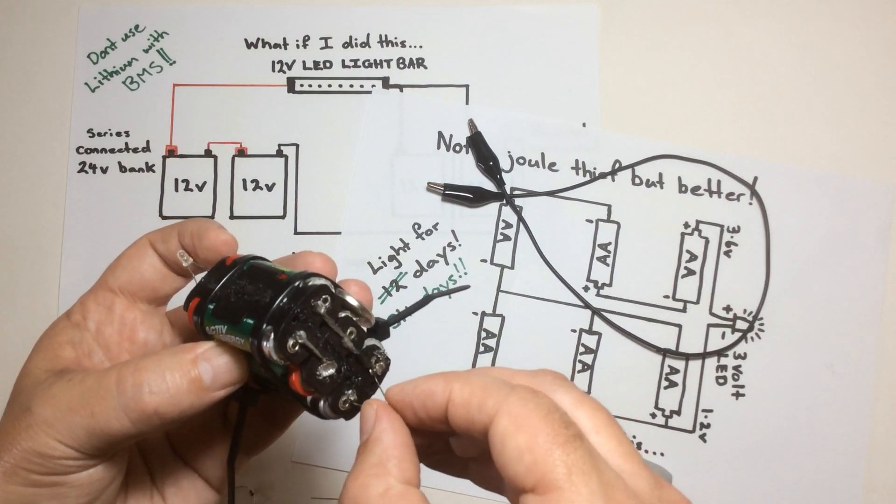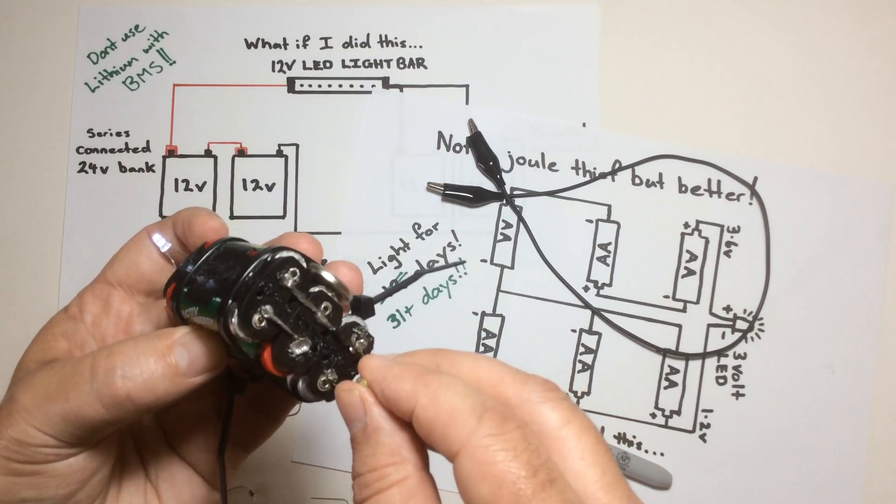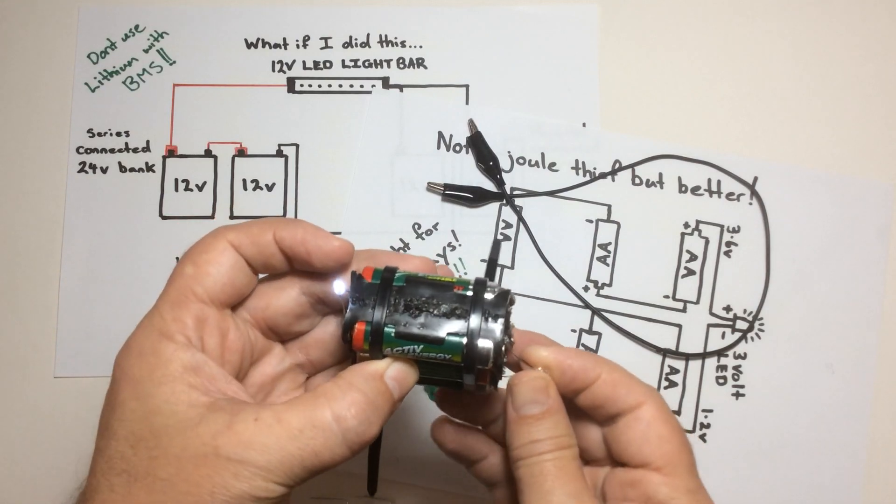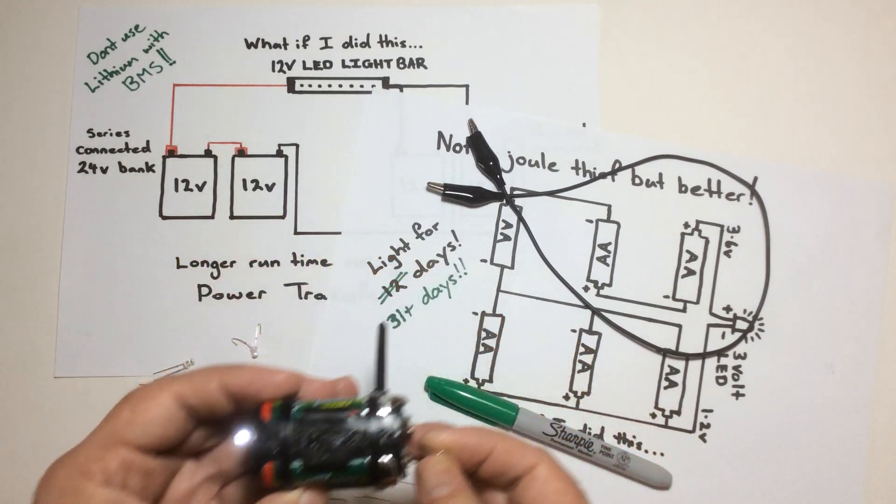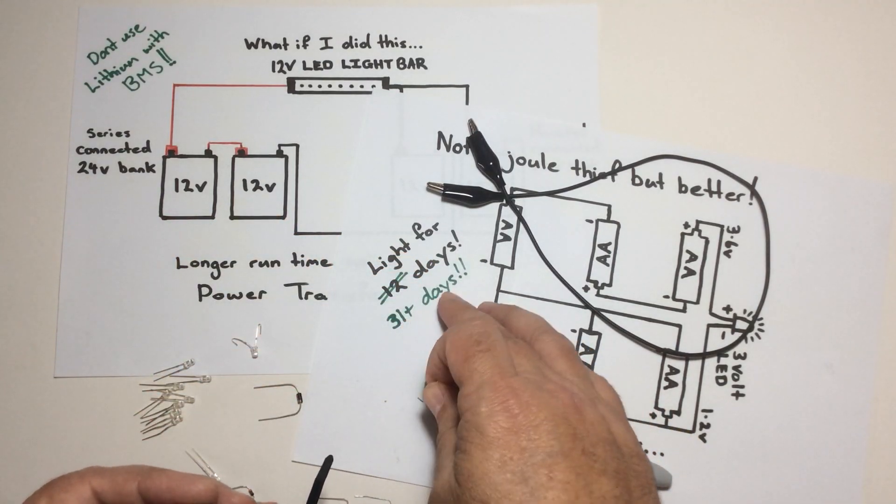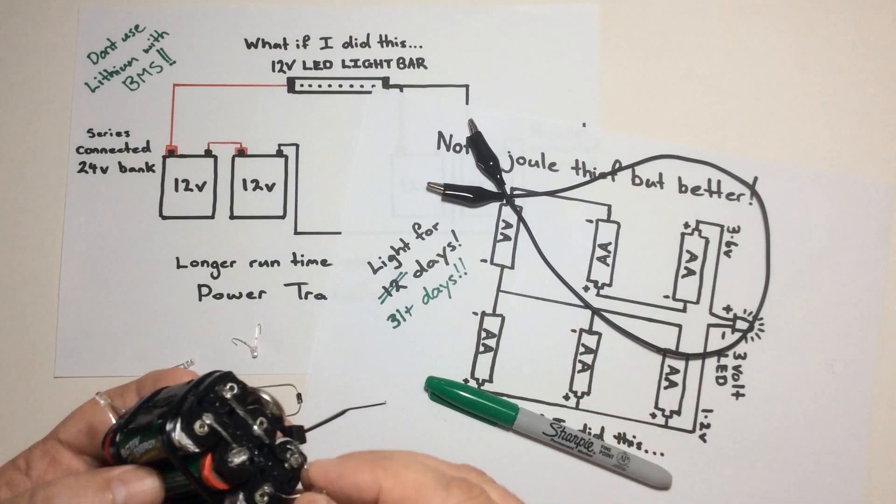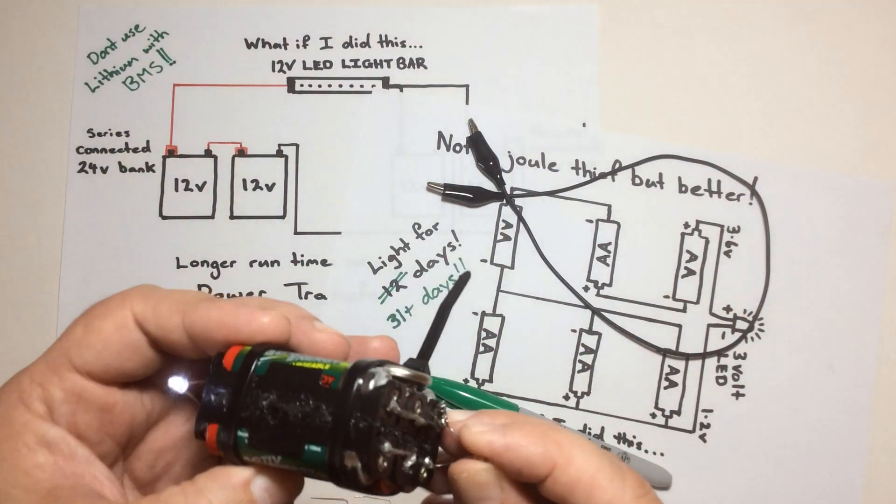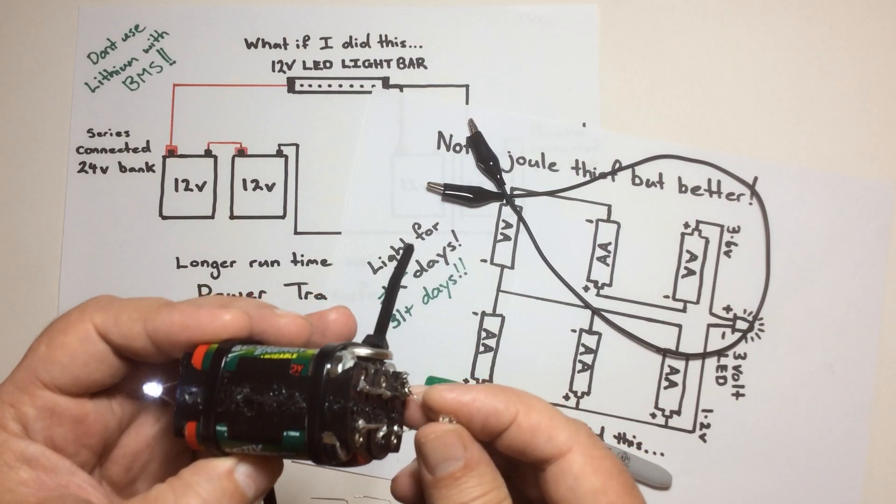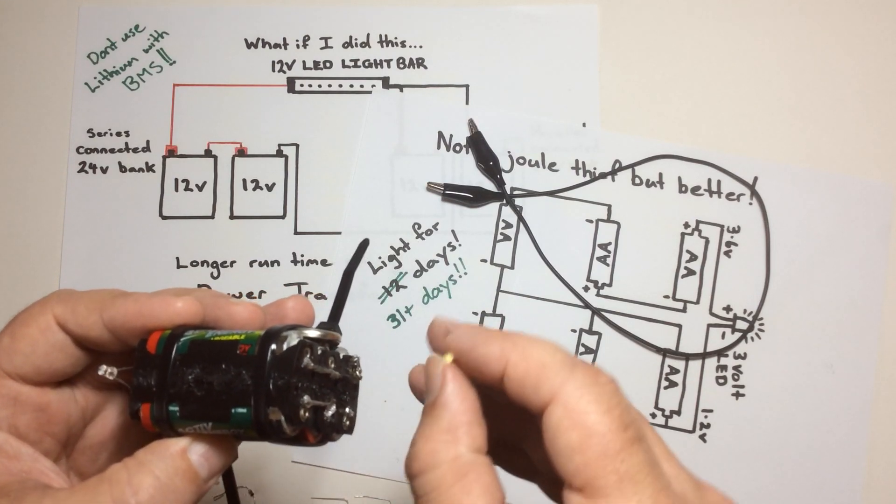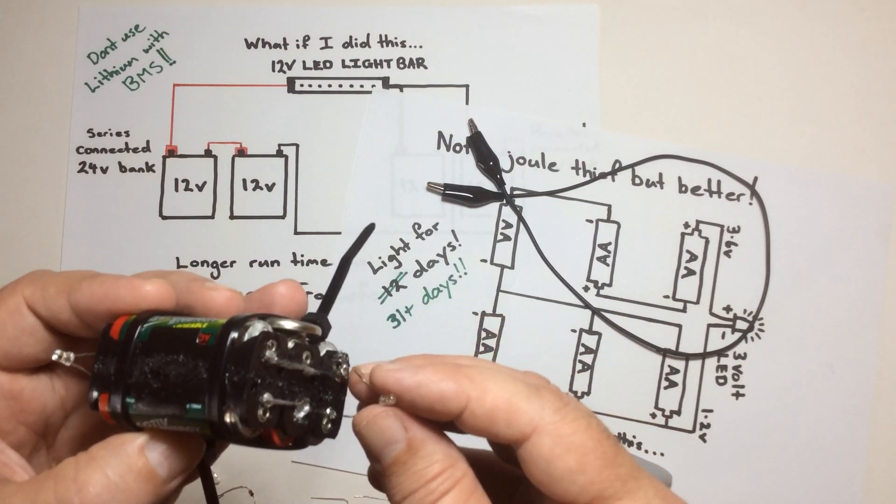I thought to myself, that's weird. I'll leave it like that and we'll see how long it lasts and that's when it ran for 31 days. So I thought to myself, well, I need to investigate that. So if I remove that diode, sorry, the LED, which is a diode, and I investigate this ability for it to turn around.